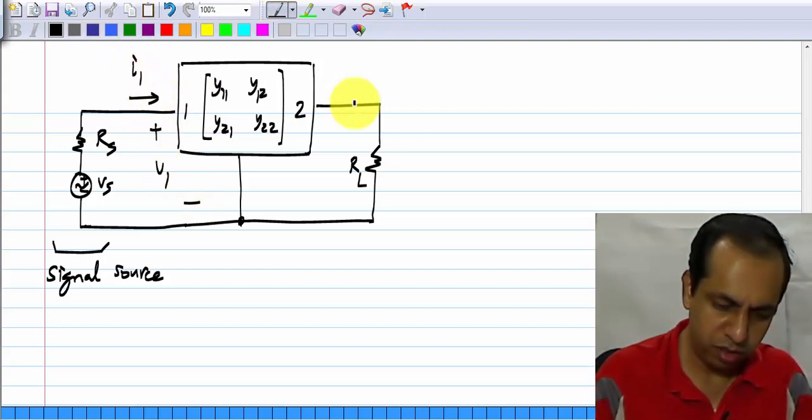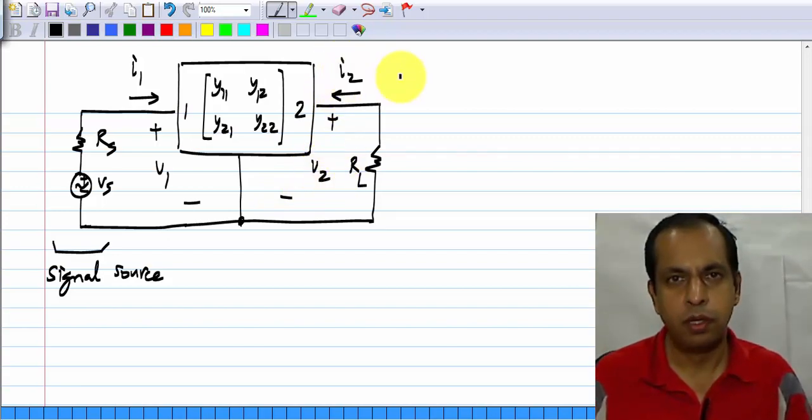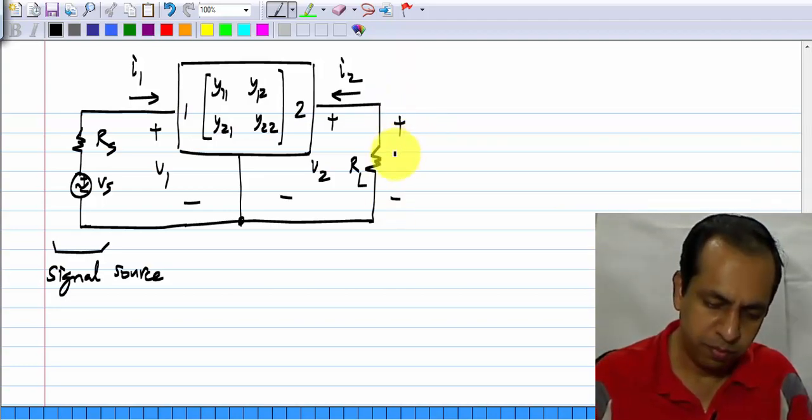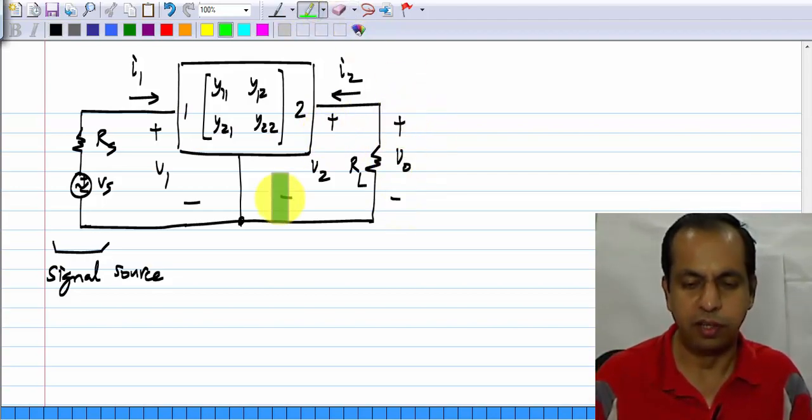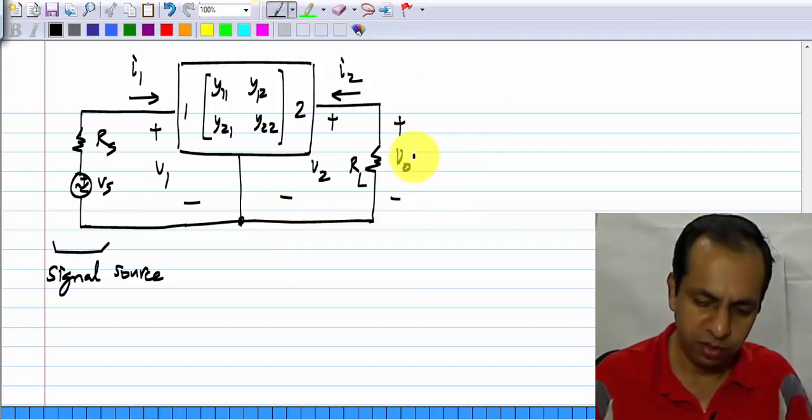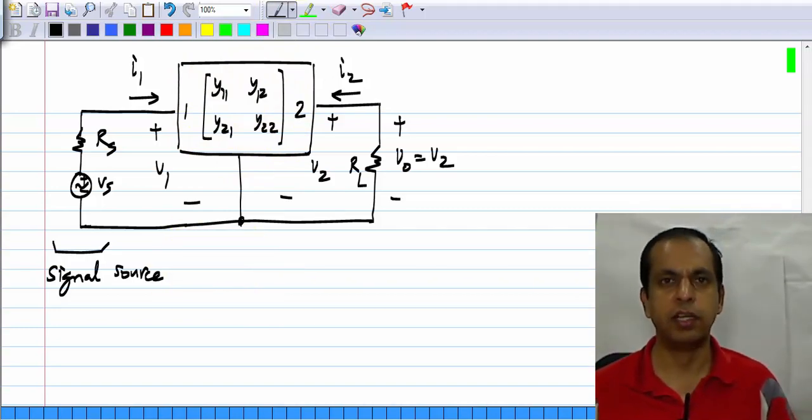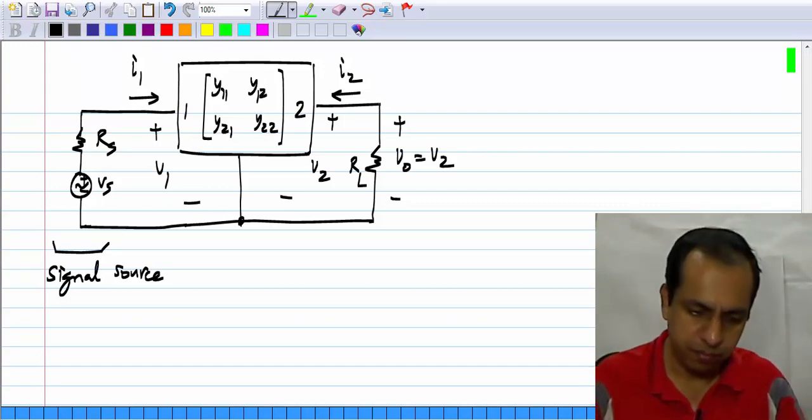We have to solve for the output voltage V naught, which you see is exactly the same as this V2. Essentially we have to solve for V2. First of all, we have relationships imposed by the two port. This must be familiar to you from regular circuit analysis. Every element in the circuit imposes some constraints between its voltages and currents, and you take all of the constraints and solve for the circuit.